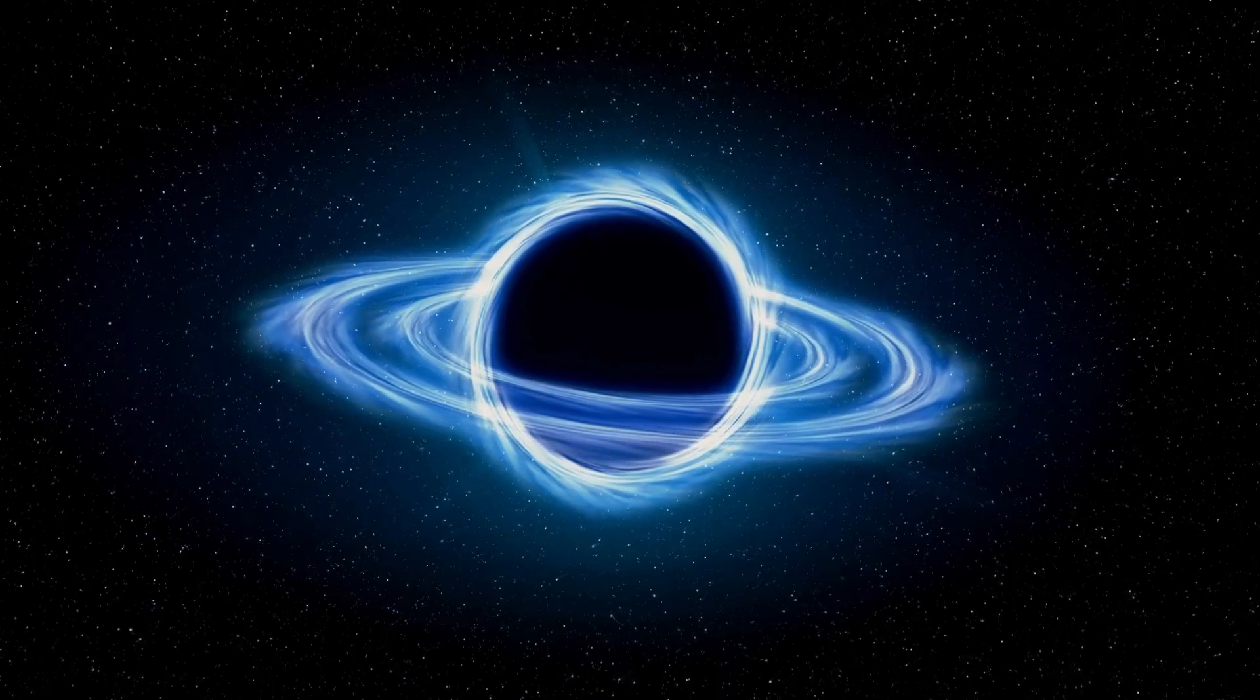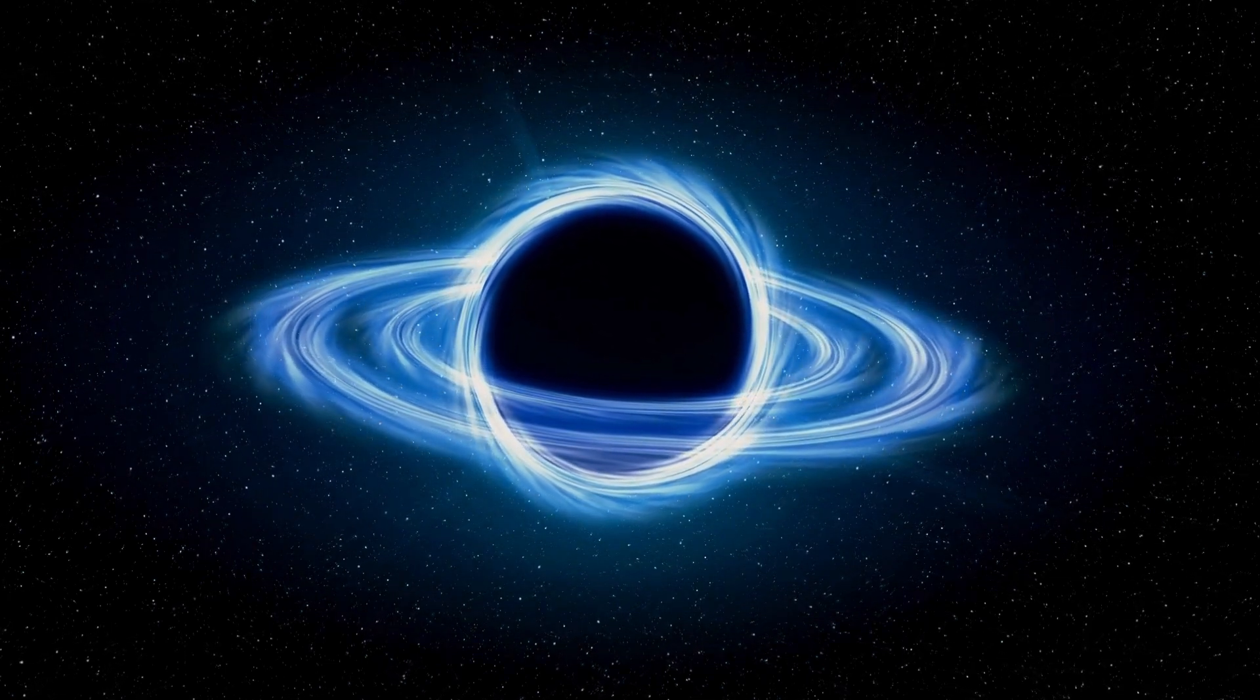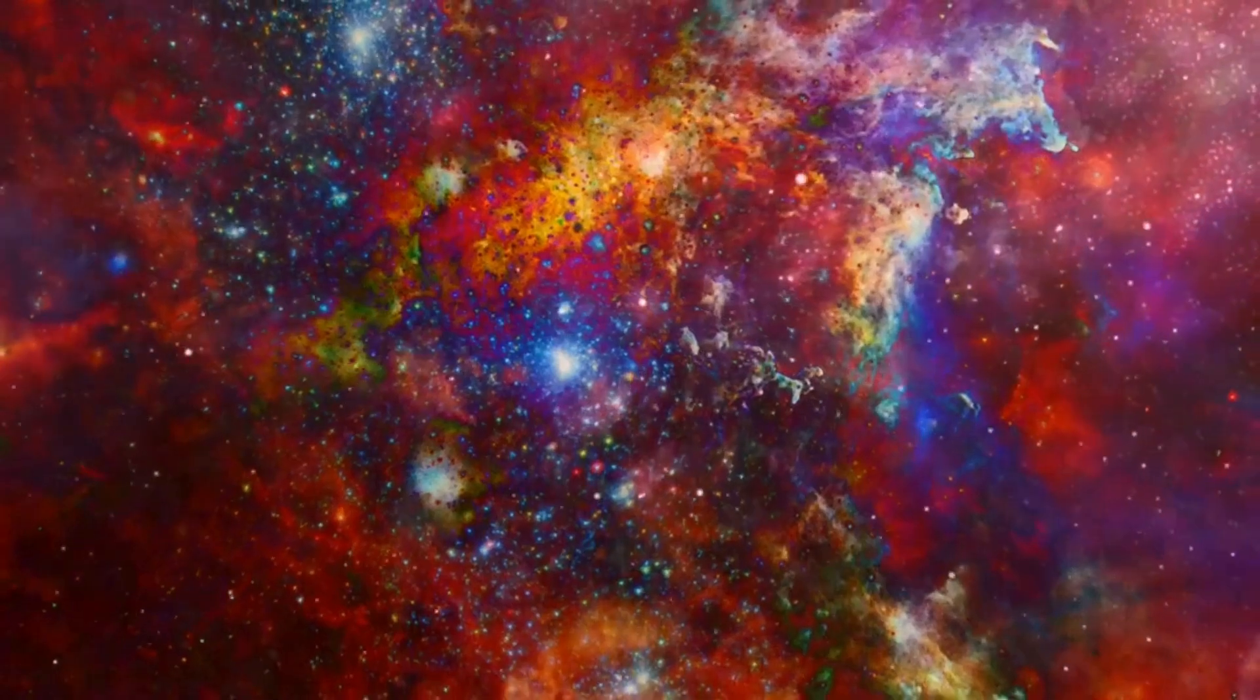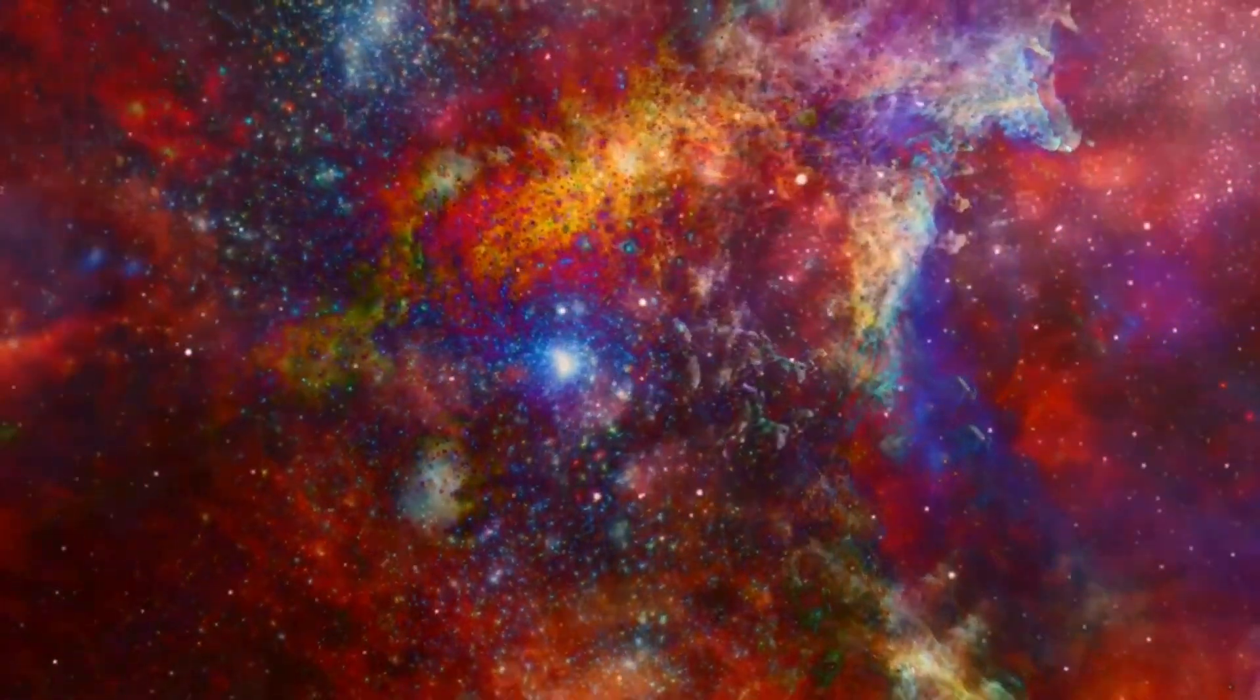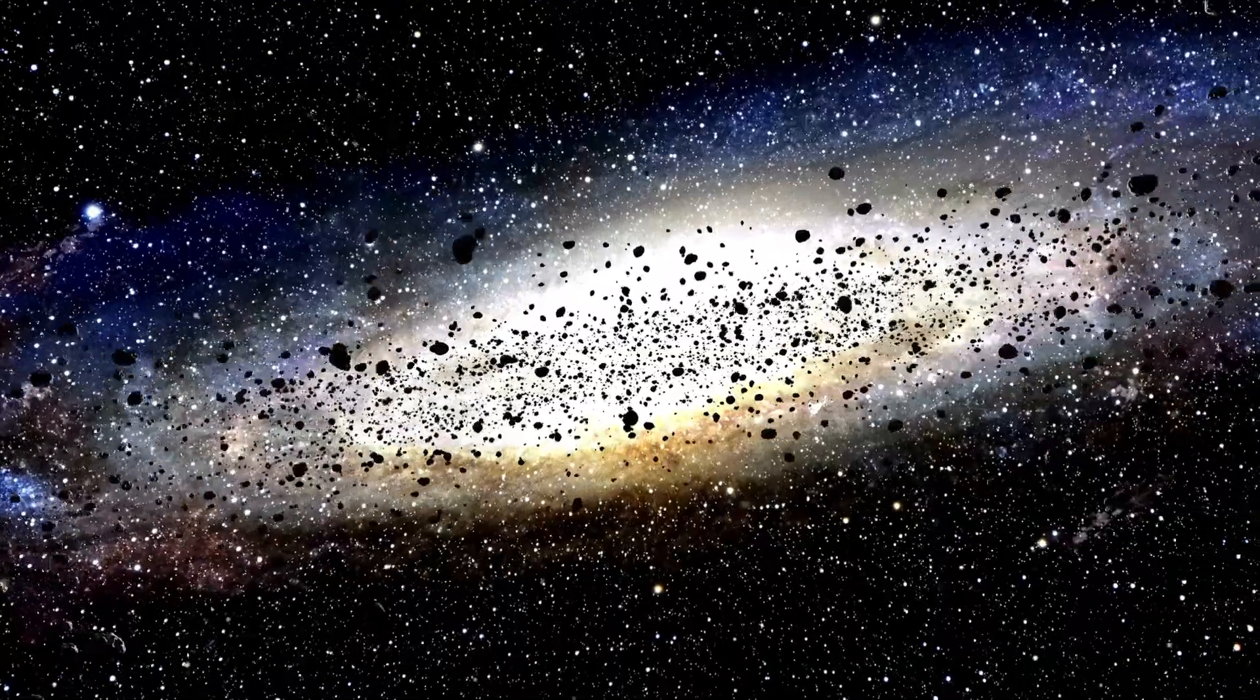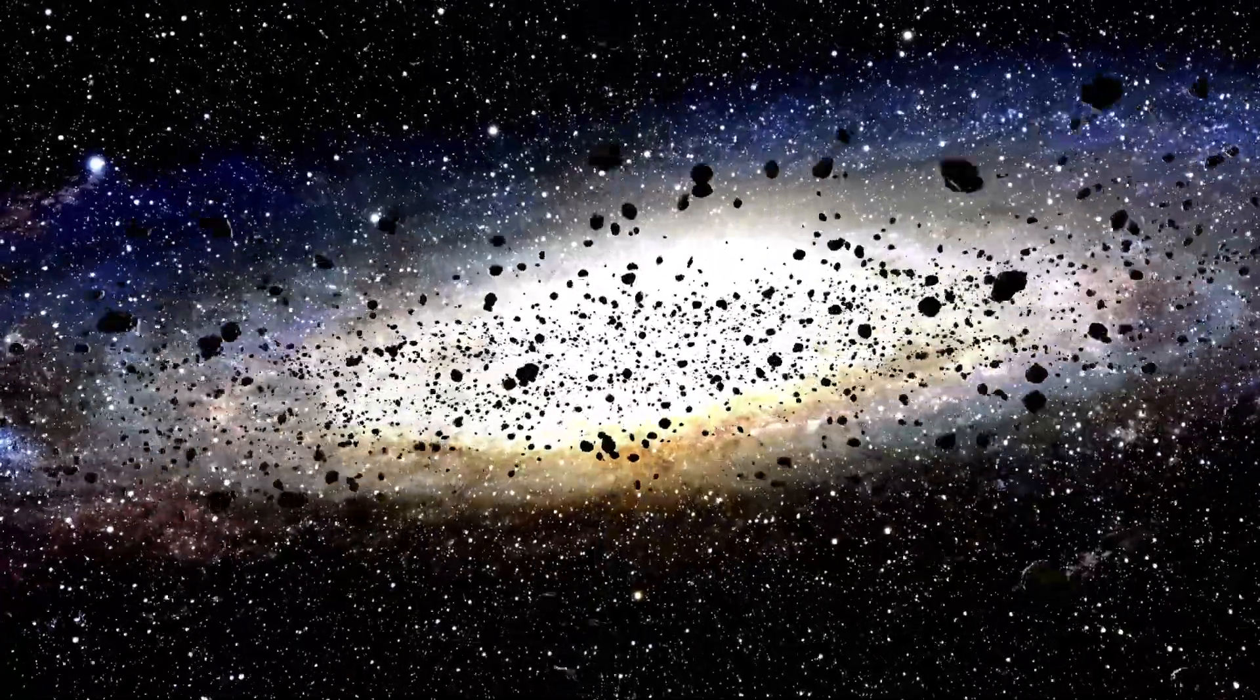Amidst these scientific debates and speculations about Betelgeuse's fate, one fact remains unchallenged, the very nature of our observation. When we look up at the starry expanse, there's a subtle paradox we often overlook. This paradox is rooted in the very nature of time and light in our vast cosmos. Stars and celestial bodies are so distant that their light takes a momentous amount of time to reach our eyes. For instance, the speed of light, while being an astounding 186,282 miles per second, still has its constraints.